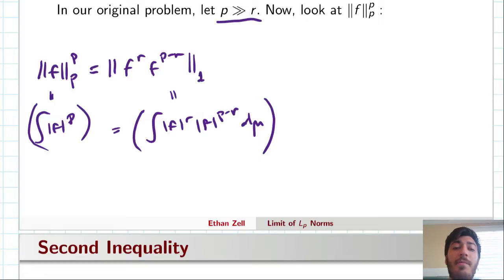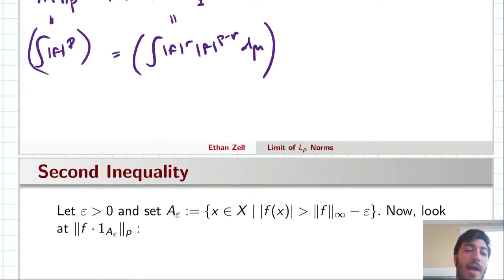So, now we have something we could maybe use Holder with. So, let's go ahead and do that. And let's pass infinity to the p minus r power. So, f to p minus r, infinity, and let's pass 1 to the r power. So, r and 1. And now, we can take both sides to the power 1 over p and see what happens. So, we get the p-norm of f is bounded above by, and let's just bring those powers out, p minus r over p, still the L^infinity norm. And then on the right, we have r over p and 1.